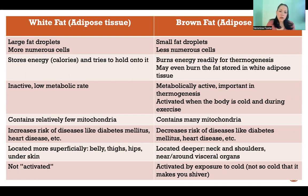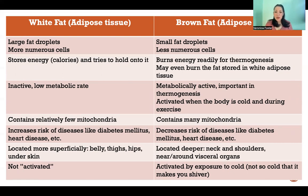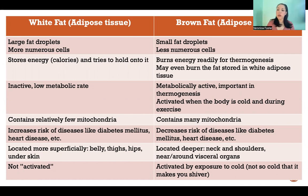White fat stores energy or calories and it tries really hard to hold on to it — it doesn't want to let go of its stored energy. Whereas brown fat is actually very busy. It's metabolically active, it's burning energy very readily, and it contributes significantly to our thermogenesis, meaning our production of heat to maintain our body temperature.